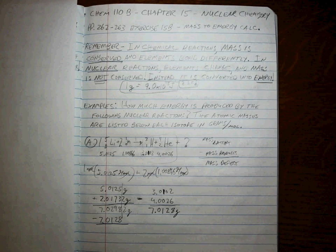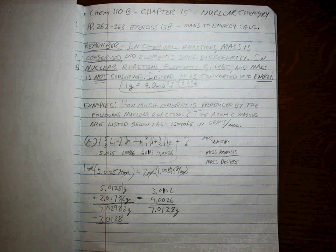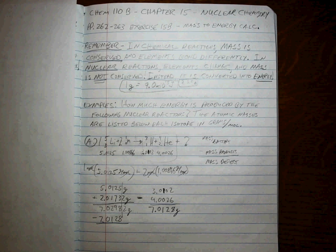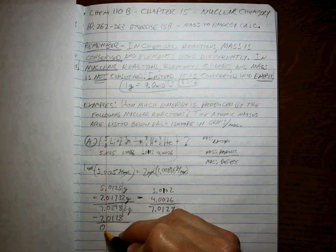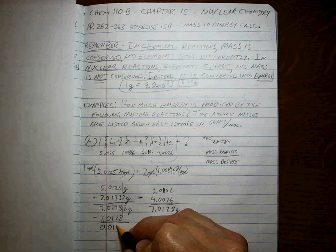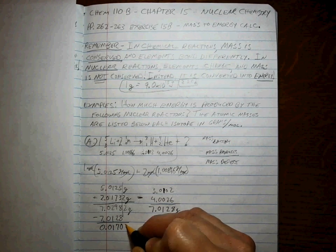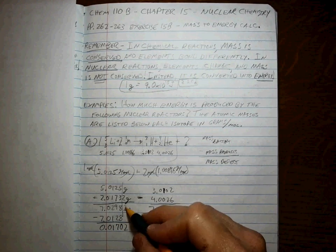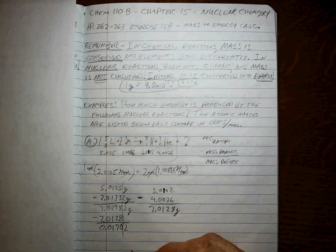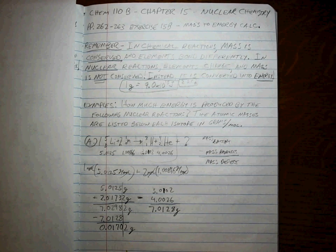7.0128 minus 7.0128 to get... 0.01702. I guess we're still going to draw the line. This is the grams that have been lost.